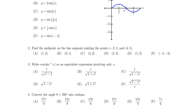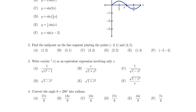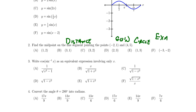Question number two is going to come from exam number one material. In this version, you're asked about the midpoint — here are two points, find the midpoint. Some variations include finding the distance between two points or finding the equation of a circle, including the general equation of a circle. These are all topics from exam number one. The distance and midpoint question was question three on that exam, and the question about circles was question four.